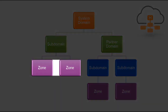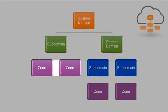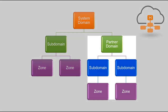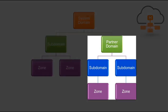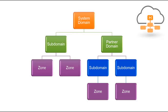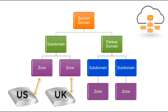Whereas domains define administrative boundaries, zones define the settings that will be applied to the access points. Zones can be created within the system domain, a subdomain, or within a partner domain. Zones can be created according to logical boundaries where you don't want access points operating together — for example, if you wanted to have specific settings such as a country code or specific WLANs applied to the access points.